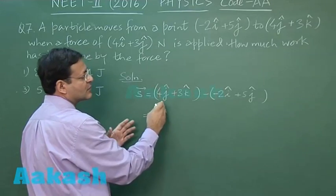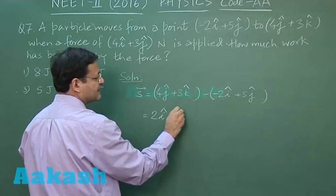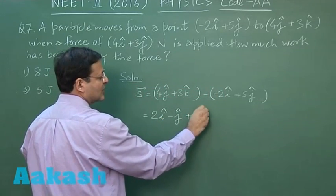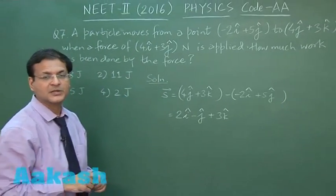4j minus 5j, that makes it -j cap, and 3k minus 0, so that makes it 3k cap. So I am assuming this is in meters. So this is the displacement, you understand.